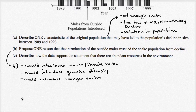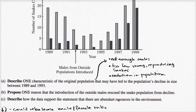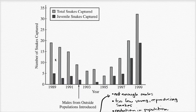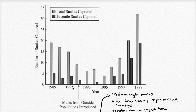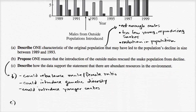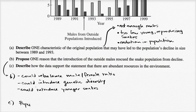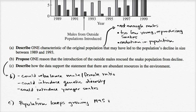Part C asks: describe how the data support the statement that there are abundant resources in the environment. If you just saw this data, you might wonder if limited resources caused the decline. But notice — when you introduce males from the outside, all of a sudden the population keeps increasing, and actually goes above where it was in 1989. That's a pretty good indication of abundant resources, since there's nothing putting a ceiling on growth once you fix the problem by introducing outside males. The population keeps growing from 1993, and especially from 1995 onward.